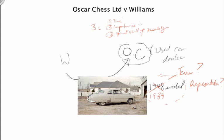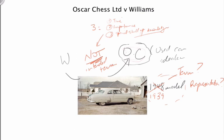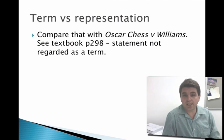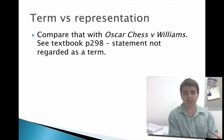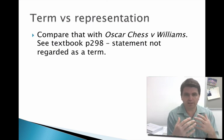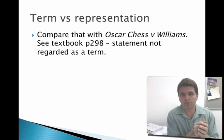The court found that based on the context of the transaction, the parties had not intended it to be a term. As an experienced dealer, Oscar Chess should have been able to confirm the age of the vehicle for themselves, so the statement was a non-contractual representation. Notice the difference: in this case, the party to whom the statement was made had the knowledge — not the person making the representation. Because of that, the court said this was an inducement rather than a term of the contract. So hopefully that gives you an understanding of the difference between a term that becomes part of the contract and those things that are just representations — part of the negotiating process meant to induce someone to enter the contract.